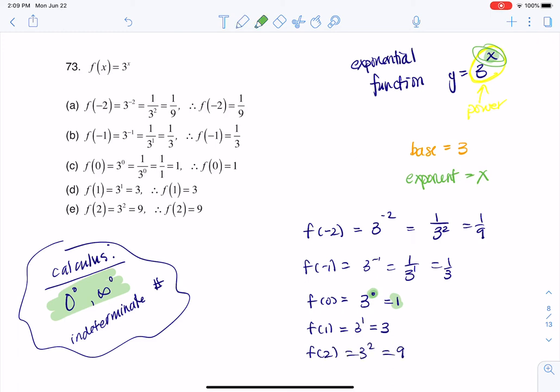And just as we're finishing this up, take a look. When you have 3 to the negative 2, what's the relationship to 3 squared? Well, they're reciprocals of one another. We've got 1 ninth versus 9. Thanks so much, everyone. Bye.